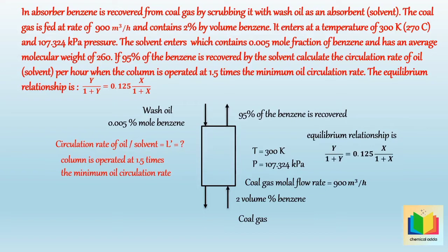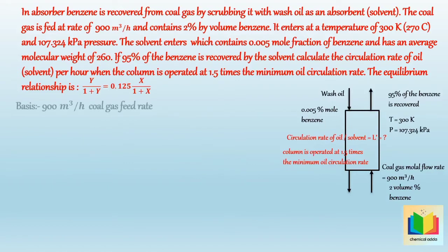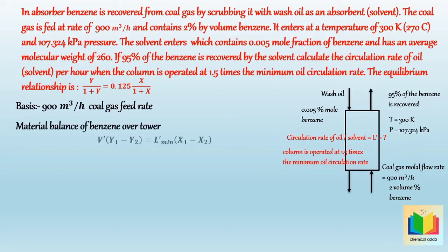In this problem we have to calculate the solvent flow rate to the absorber when it is 1.5 times of the minimum oil circulation rate. That means first we have to calculate L minimum, then from this we can calculate L actual, that is the actual solvent flow rate. Now let's solve this sum. We take the basis as 900 meters cube per hour coal gas feed rate. To calculate L dash, we take a material balance of benzene over the tower: V dash into (Y1 minus Y2) is equal to L dash minimum into (X1 minus X2). From this equation, if we know Y1, Y2, X1, X2, and V dash, then we can calculate L dash minimum, and from this the actual solvent flow rate can be calculated.